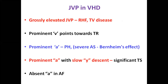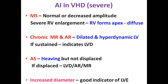Summary of JVP in valvular heart disease: grossly elevated JVP — think right heart failure from tricuspid disease. Prominent V wave — TR. Prominent A wave — pulmonary hypertension or tricuspid stenosis in severe aortic stenosis. Prominent A with slow wide Y descent — significant tricuspid stenosis. Regarding apical impulse in severe valvular heart disease: mitral stenosis gives normal or decreased amplitude — when there is severe RV enlargement, RV forms the apex and may be diffuse. Chronic MR and AR give dilated hyperdynamic LV — when sustained, think LV dysfunction. Aortic stenosis gives a heaving but not displaced apex — when displaced, consider LV dysfunction or significant AR. Increase in diameter of the apical impulse is more predictive of LV enlargement.